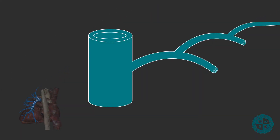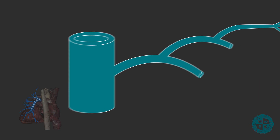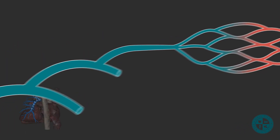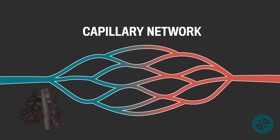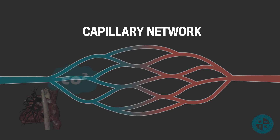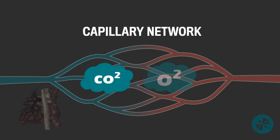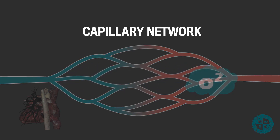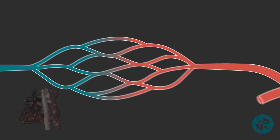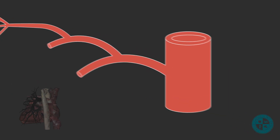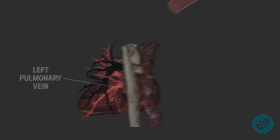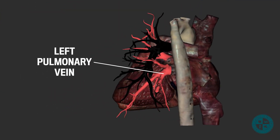After going into the left pulmonary artery, we branch and branch and branch until we reach the capillary network surrounding the alveoli in the lungs. Gas exchange is occurring, so we're picking up lots and lots of oxygen. As we come to the end of the pulmonary circuit, we make our way back to the heart via one of the left pulmonary veins.